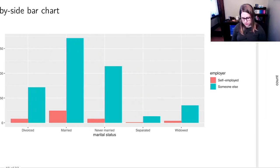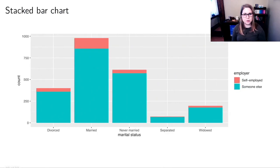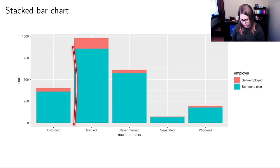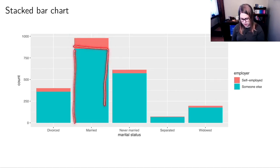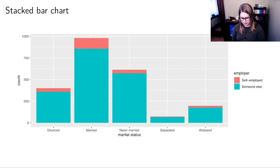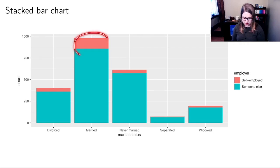Another option is a stacked or segmented bar chart. The bar shows how many people total are divorced or married — there are almost 1000 married people in my data set — and the colors show how many work for someone else versus how many are self-employed. You can see the overall trend; it looks like a larger proportion of people are self-employed in the married category than in these other categories.